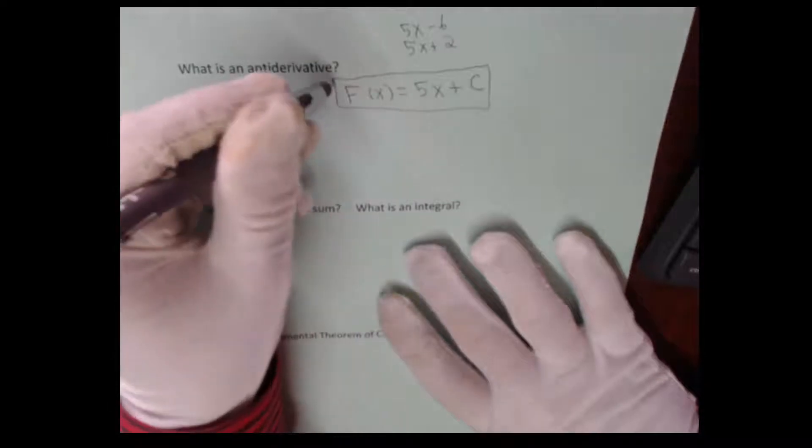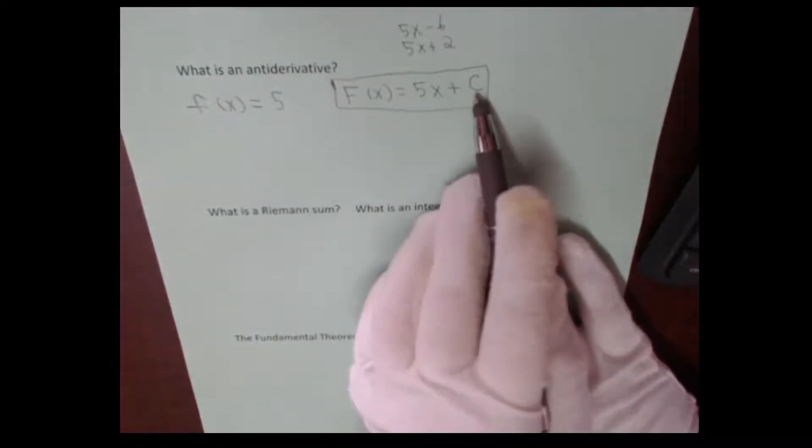This is your antiderivative. We say that this is kind of a general form or a family of functions because that c can equal anything.